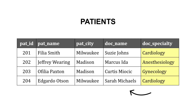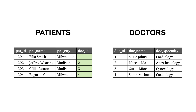To get to third normal form, we break this up. We'll have a patients table and a doctors table. In the patients table, we'll just have a foreign key for the doctor ID that directs us to the doctors table, where we see the doctor name, their specialty, and it could also include their address, their home hospital, among other things.